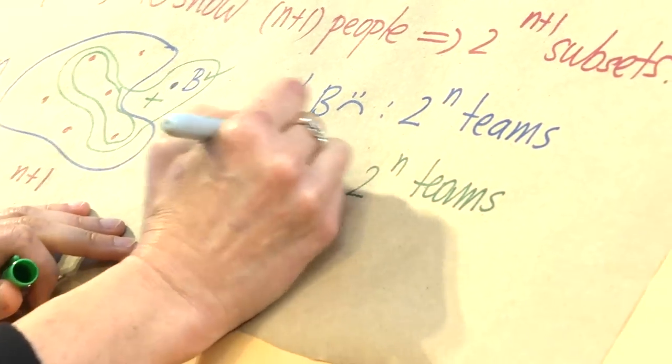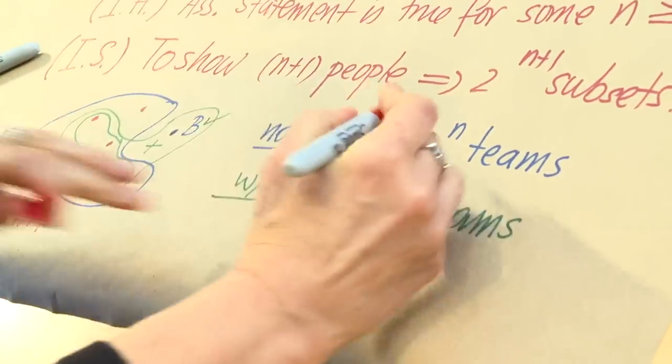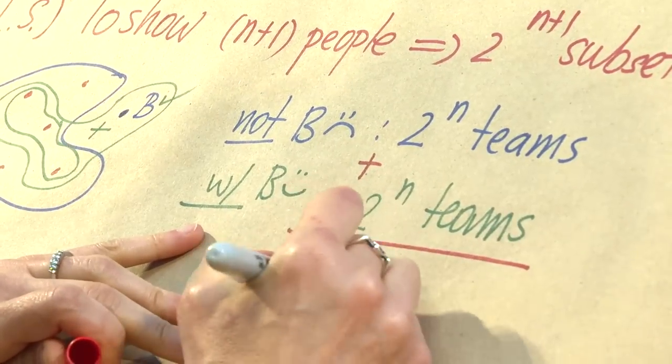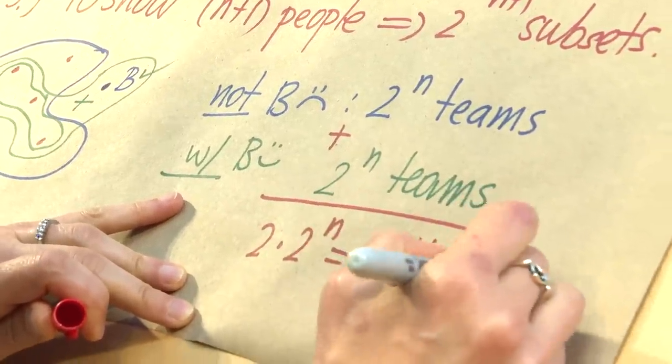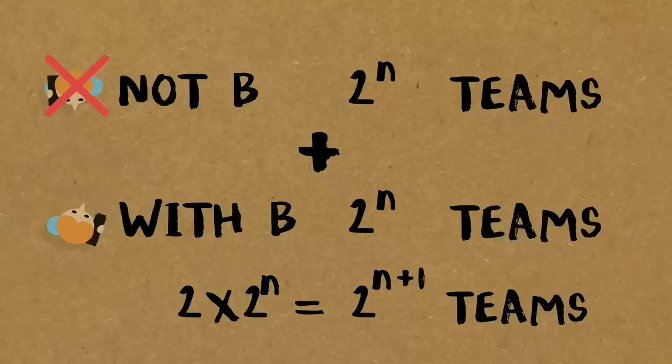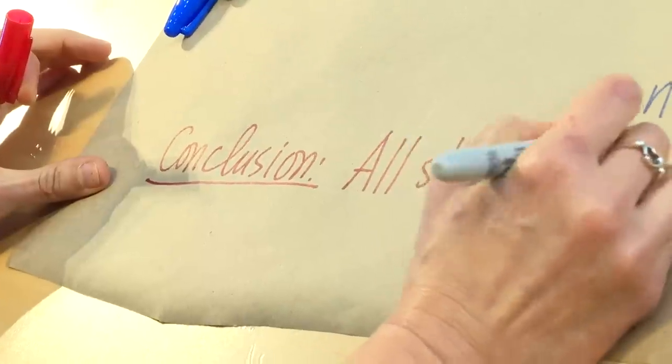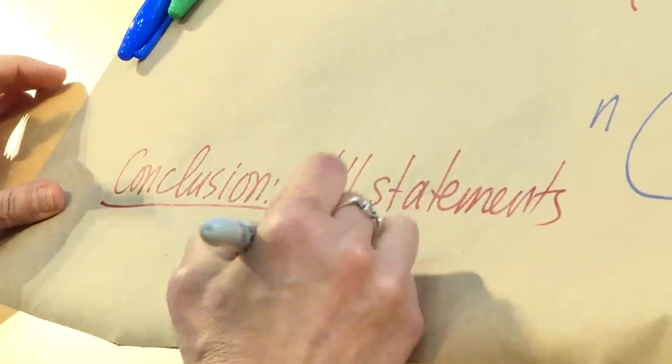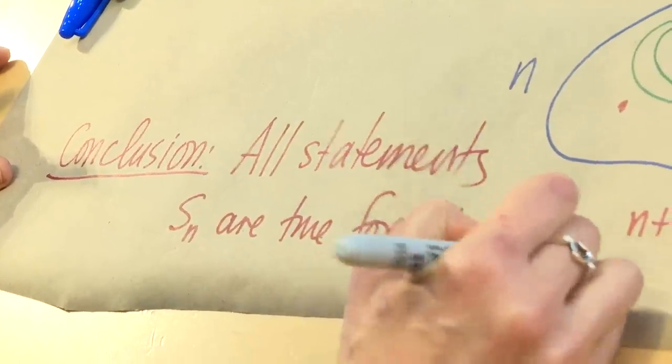So how many do we have now overall? All I have to do is add 2^n plus 2^n. So that's 2 times 2^n, 2^(n+1) teams. Excellent. So we just showed the inductive step. And here, if you want to be absolutely formal, you want to receive a receipt for your proof, you have to make a conclusion. The conclusion says, therefore, all statements S_n are true for all n greater than or equal to 1.